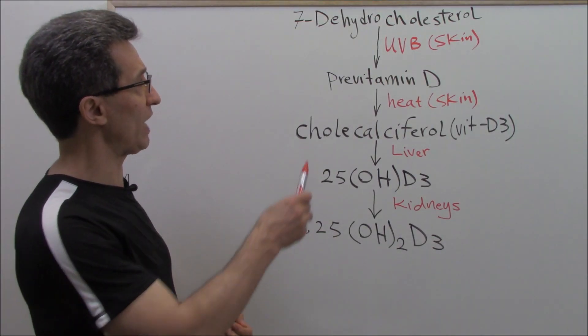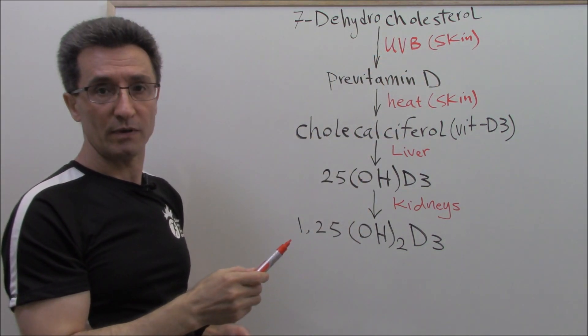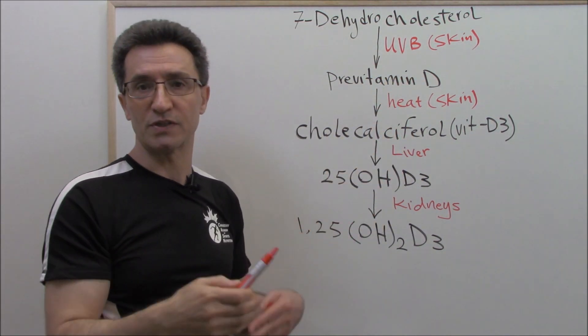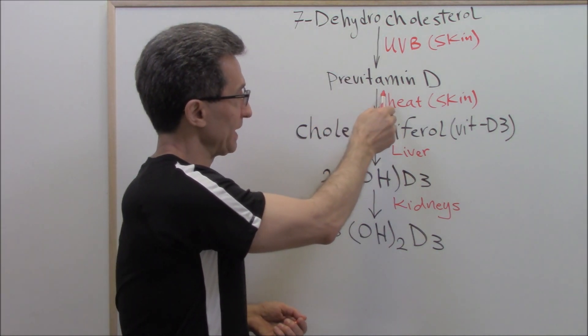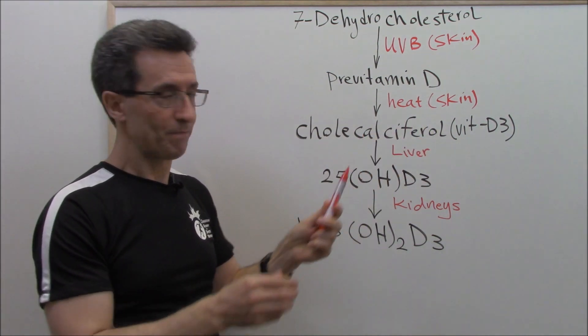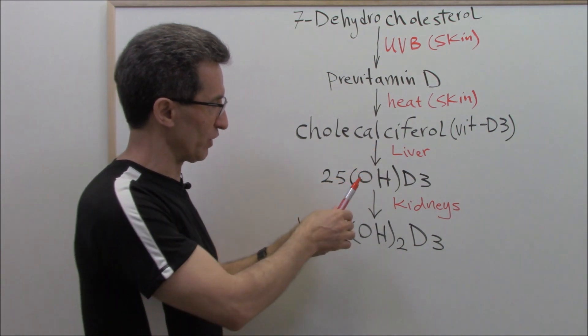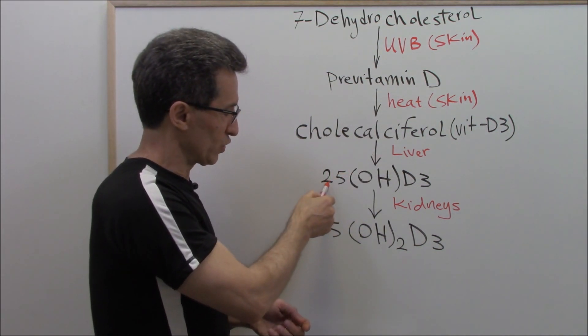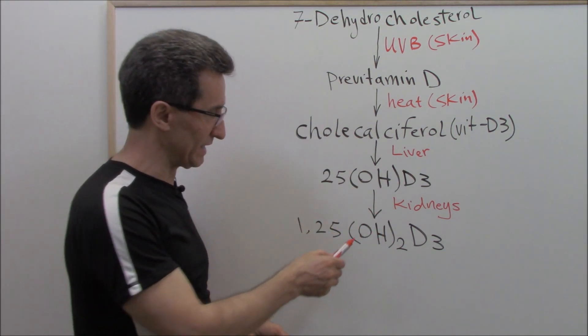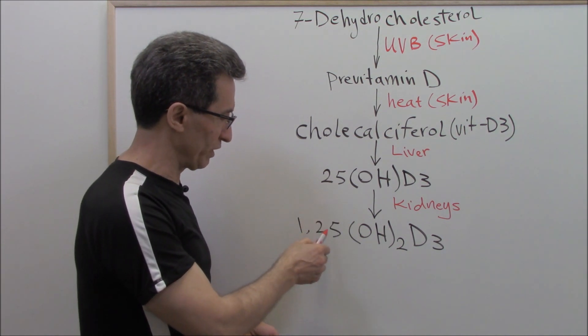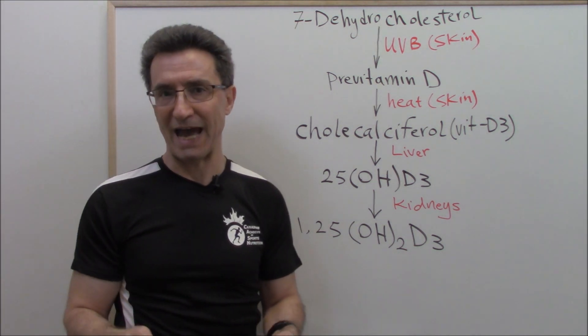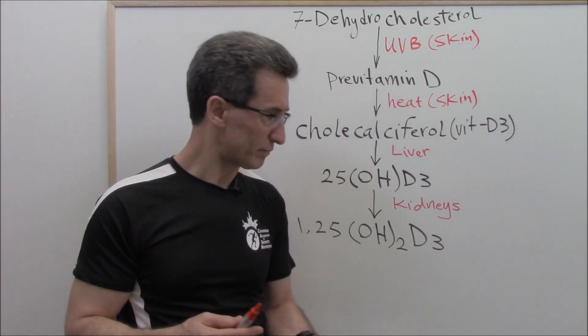In your skin you have 7-dehydrocholesterol. Under the influence of ultraviolet type B from sun rays, it will convert to previtamin D. Previtamin D will convert to cholecalciferol by heat in the skin. Then cholecalciferol will be carried to the liver, and your liver is going to convert cholecalciferol to 25-hydroxyvitamin D3. Then 25-hydroxyvitamin D3 will be carried to the kidneys, and your kidneys will convert that one to 1,25-dihydroxyvitamin D3. 1,25-dihydroxyvitamin D3 is the active form of vitamin D in the body.